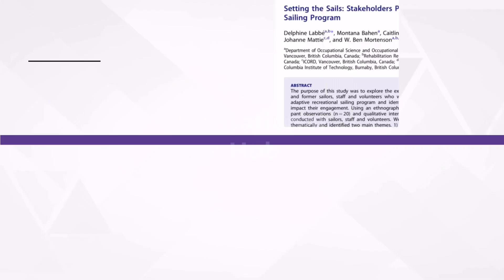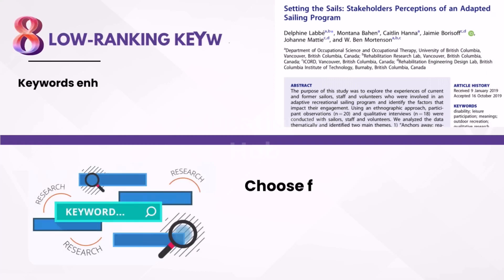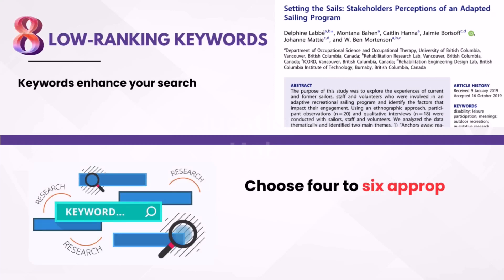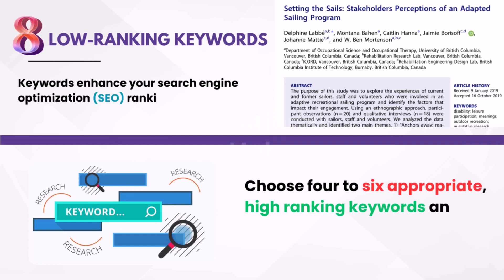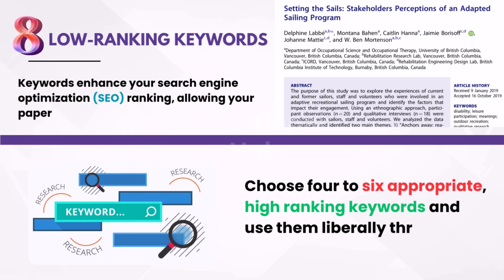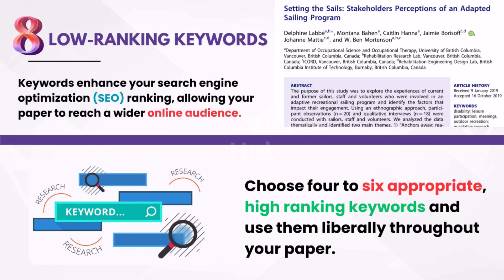8. Low-Ranking Keywords. Keywords enhance your search engine optimization (SEO) ranking, allowing your paper to reach a wider online audience. Choose four to six appropriate, high-ranking keywords and use them liberally throughout your paper.